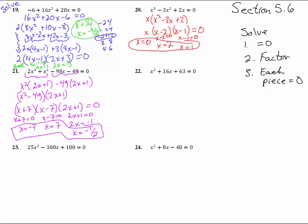Now number 22. No greatest common factor here. It looks like a trinomial with leading coefficient 1. So we can just x and x and take the number 63. What times to 63 and adds to 16? You've got 1 and 63, 3 and 21, 7 times 9, and there we go. x plus 7, x plus 9 equals 0.